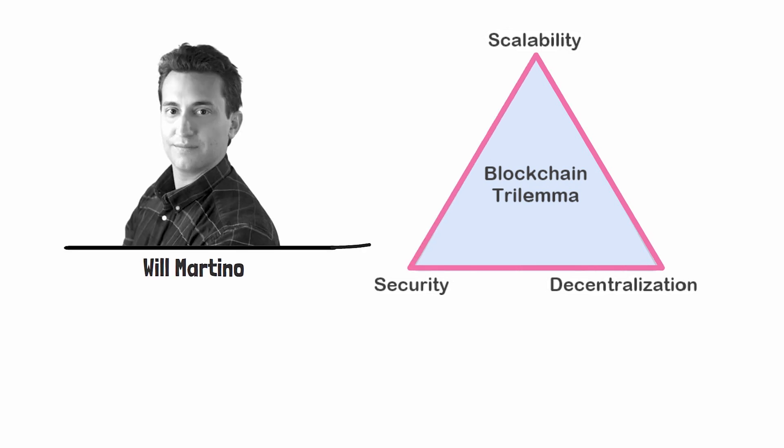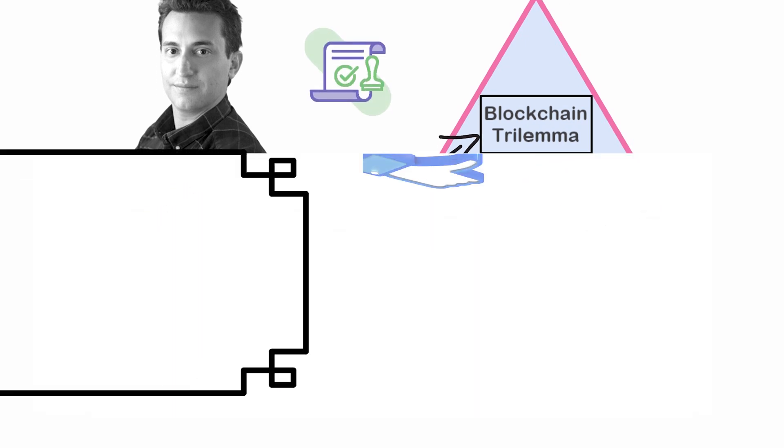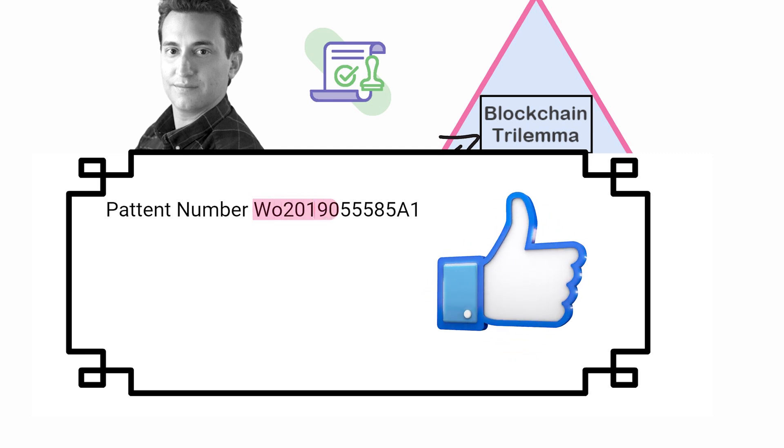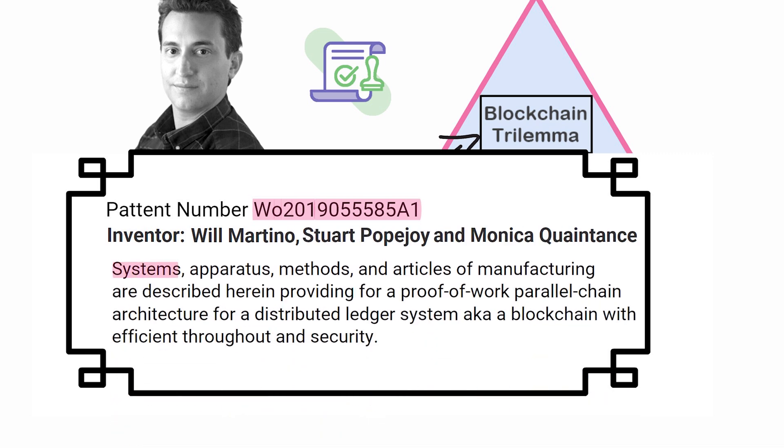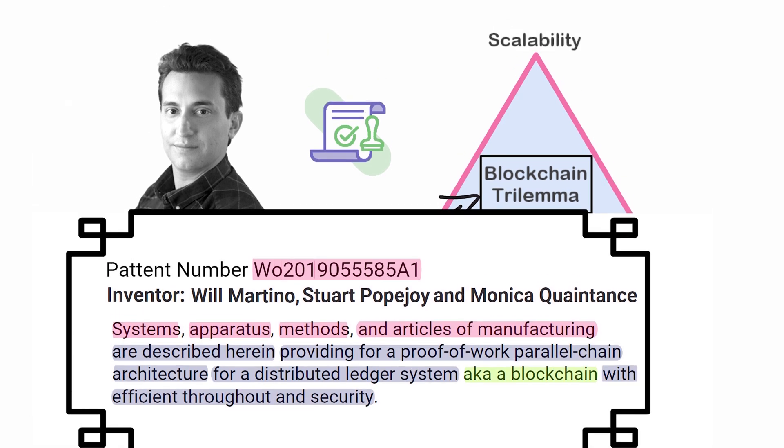Not only did Kadena's president Will Martino solve the blockchain trilemma, he also got a patent on it. Check this out: Patent number WO-2-0-1-9-0-5-5-5-8-5-A-1, inventors Will Martino, Stuart Popejoy, and Monica Quaintance. Systems, apparatus, methods, and articles of manufacturing are described herein providing for a proof-of-work parallel chain architecture for a distributed ledger system (aka a blockchain) with efficient throughput and security.